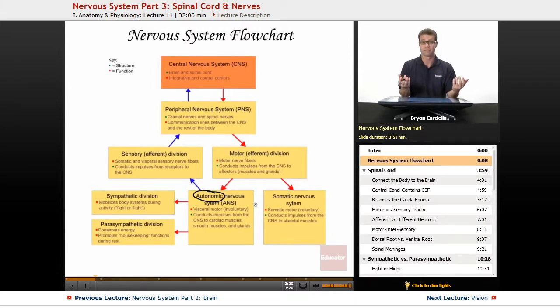Another one is sweating. Sweating, you don't have to think to make yourself sweat. It happens when you need it to. Same with digestion. So all of those things are regulated by the autonomic branch of the peripheral nervous system.